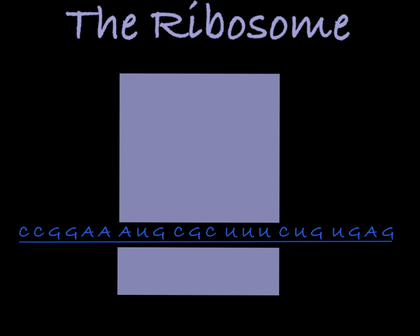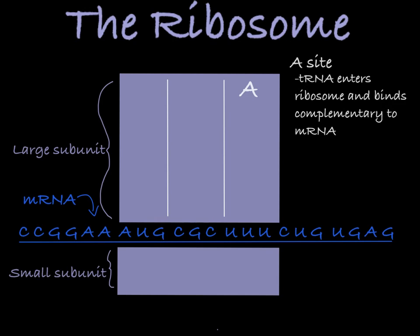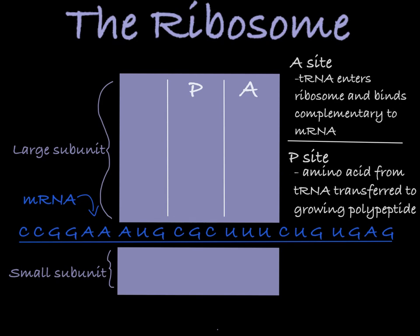The ribosome contains three internal sites for tRNA. The first site is the A site, where tRNA enters the ribosome and binds complementary to the mRNA. The second site is the P site, in which an amino acid from the tRNA molecule is transferred onto the growing polypeptide chain. And the E site is where tRNA that has already delivered its amino acid is ejected from the ribosome complex.